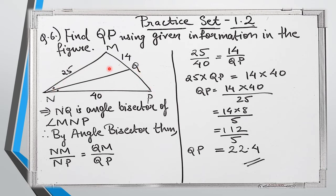If you observe the diagram, ray NQ is the bisector of angle MNP. You can see the symbols indicating that both angles are equal — that means NQ is bisecting angle N. So MN is 25, PN is 40, MQ is 14, and we have to find QP.